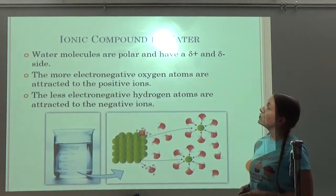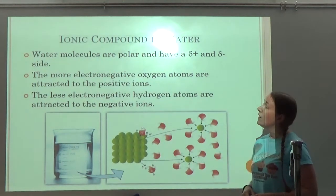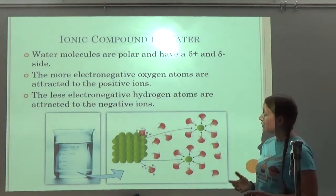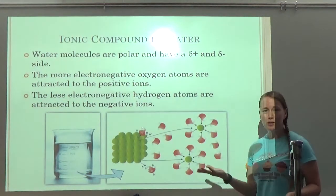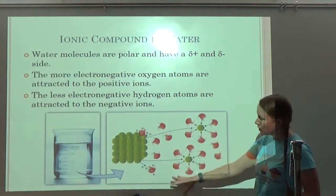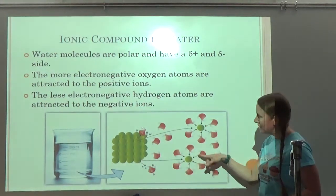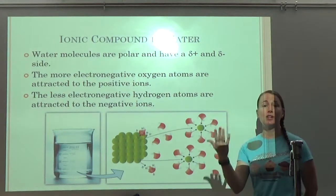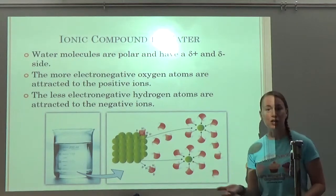Water molecules are polar and have a partial positive and partial negative charge. The more electronegative oxygen atoms are attracted to the positive ions, and the less electronegative hydrogen atoms are attracted to the negative ions. For example, if they gave me a picture where all the hydrogens are facing two ions, since I know hydrogen is partially positive, it should be attracted to a negative ion — so I could determine that both of those ions are negative.